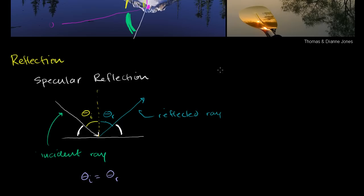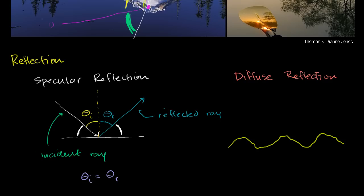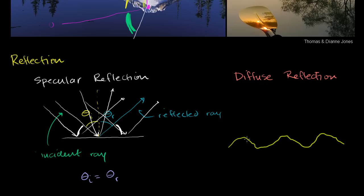Now, the other type of reflection is diffuse reflection. This is the type that may not be as obvious, but it's occurring everywhere you look. In diffuse reflection, the surface isn't smooth — it's not what we associate with a mirrored surface. Zooming in, the surface looks rough and uneven. In specular reflection, any light ray coming in will always have its angle of incidence equal to its angle of reflection, whether it hits at a shallow or steep angle.